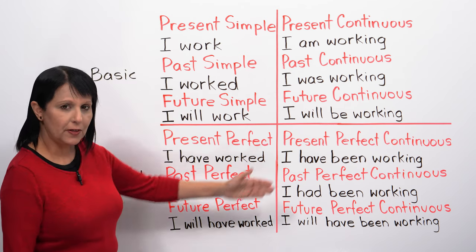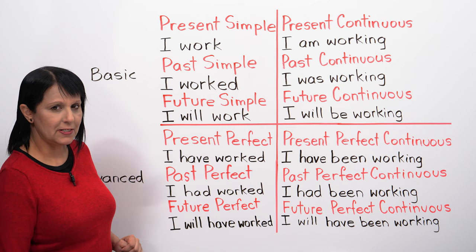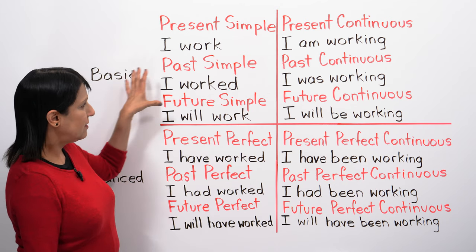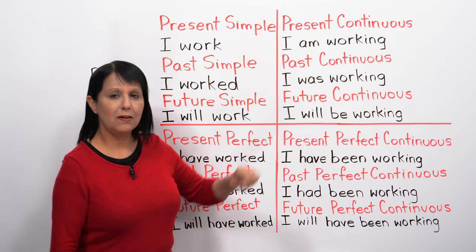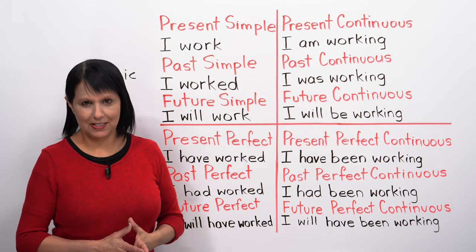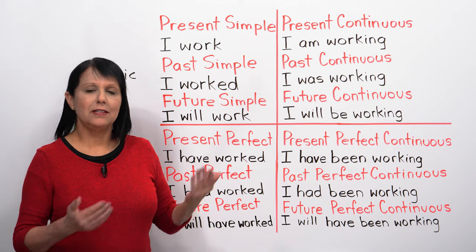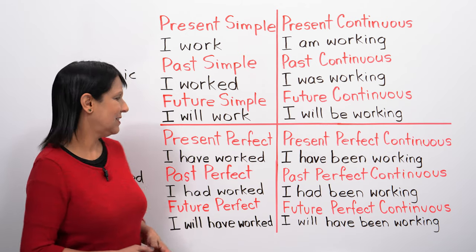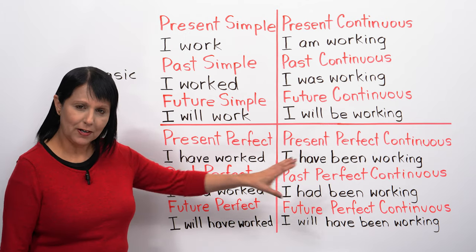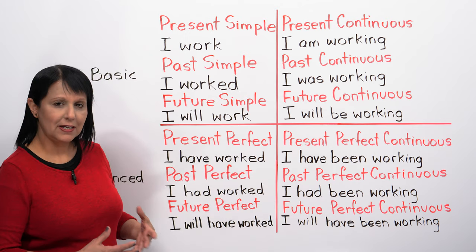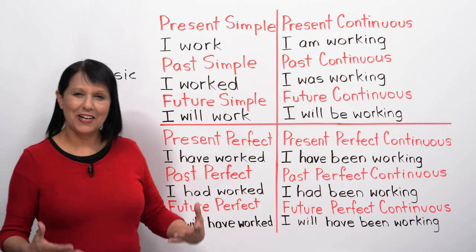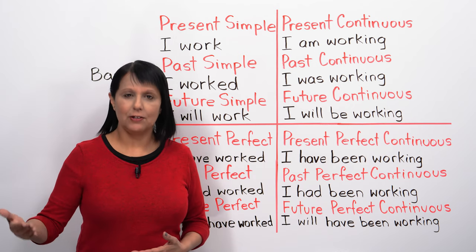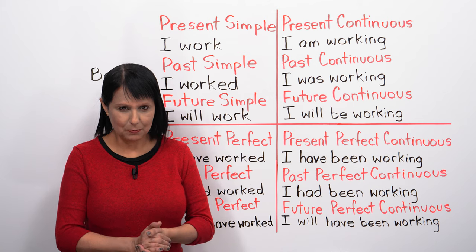Even though there are 12 tenses, I've divided them in a particular way. The first six are what I call the basic tenses, because usually these are the ones you learn first when you start learning English. The second six tenses are more advanced tenses — usually you start learning those a little bit later.